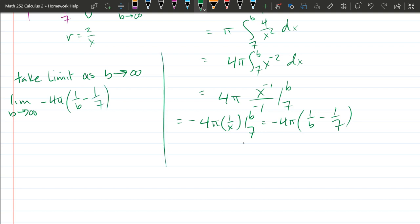There's only one variable in our limit. Remember our variable inside of our limit is b. There's only one place b appears right here. We're allowed to plug in infinity because we have one over infinity, which of course is zero.